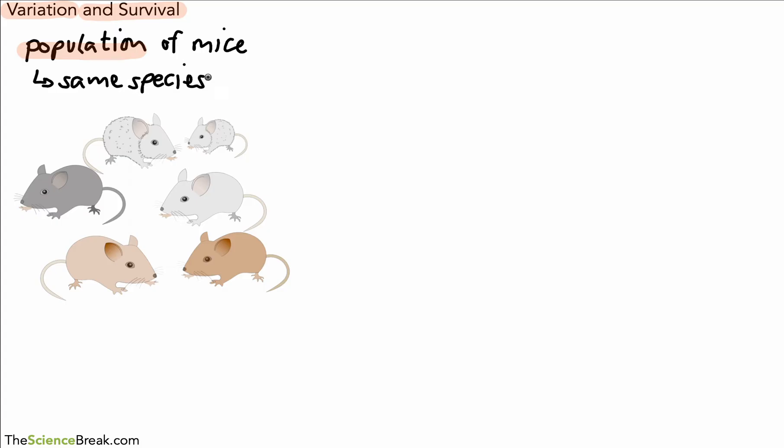So all these mice that we have in our example are the same species, however there is variation between them. We have same species here but we have variation. The word variation means differences or differences in characteristics or features.